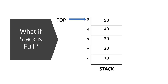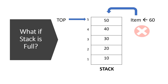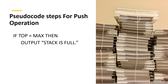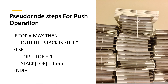Imagine if the stack is full and we want to insert a new item. Can we perform a push operation here? Of course not. If top is equal to max, the stack is full and we cannot perform the push operation. Let's write the pseudocode steps for push operation. First, check if top equals max. If yes, it means the stack is full, so display the message 'stack is full'. Else, increment top by one and insert the new item by assigning it to the new top index: stack[top] = item.